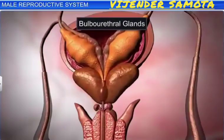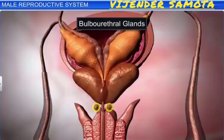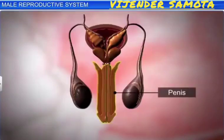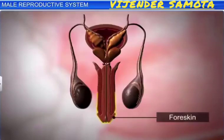The bulbourethral glands, or Cowper's glands, are pea-sized structures lying posterior to the prostate gland and at the base of the penis. Their secretions help in the lubrication of the penis. The external genitalia in males is called the penis. The penis is a copulatory organ and is covered by a loose sheath of skin. The skin that hangs over the tip of the penis is known as the prepuce, or foreskin.